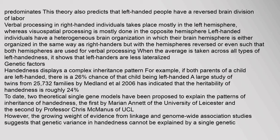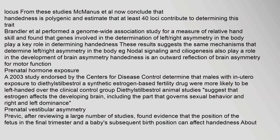To date, two theoretical single-gene models have been proposed to explain the patterns of inheritance of handedness — the first by Marian Annett of the University of Leicester, and the second by Professor Chris McManus of UCL. However, the growing weight of evidence from linkage and genome-wide association studies suggests that genetic variants in handedness cannot be explained by a single genetic locus. McManus et al. now conclude that handedness is polygenic and estimate that at least 40 loci contribute to determining this trait.